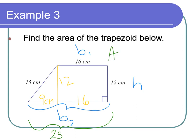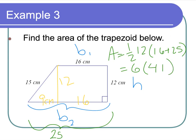Area is equal to one-half, my height of 12, then base 1 plus base 2: so 16 plus 25. One-half times 12 is 6, and 16 plus 25 is 41. So 6 times 41 is 246 centimeters squared.